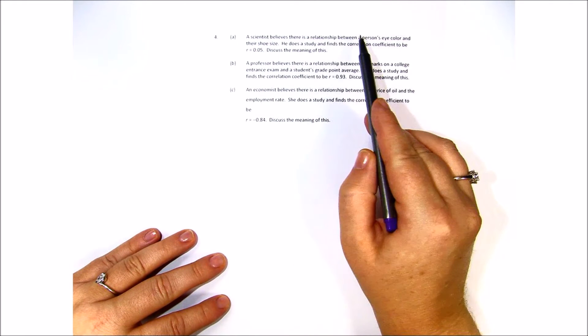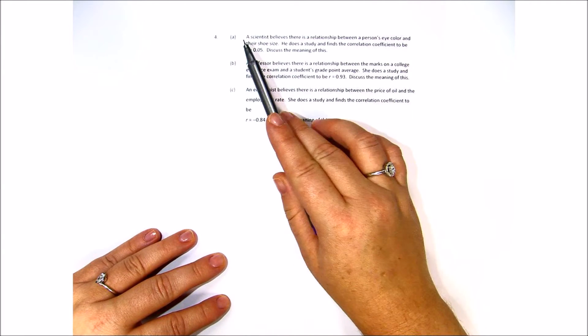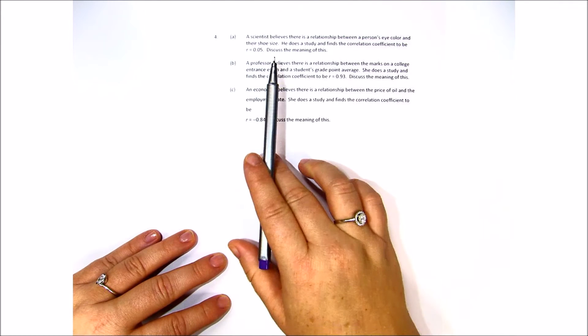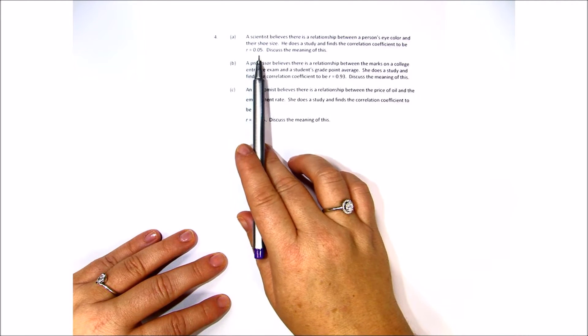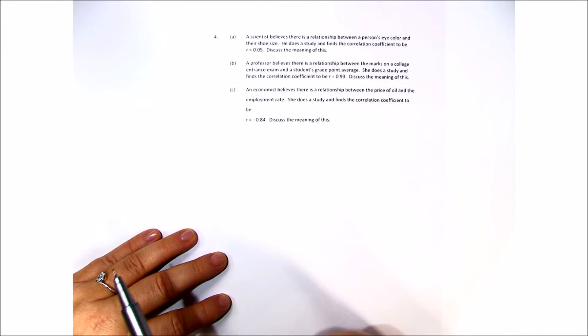A scientist believes there is a relationship between a person's eye color and their shoe size. He does this study and finds the correlation coefficient to be r equals 0.05. Discuss the meaning of this.